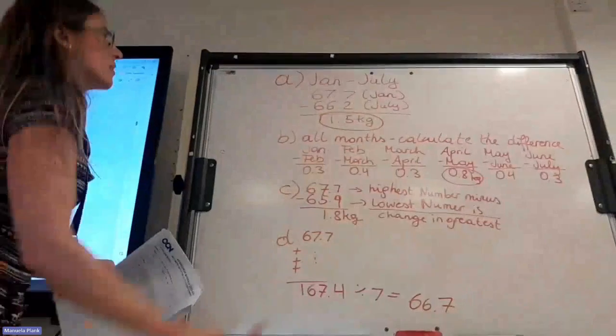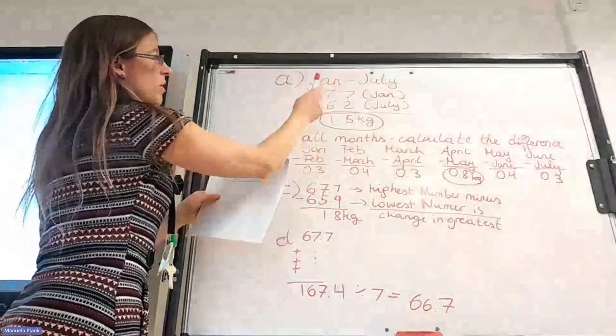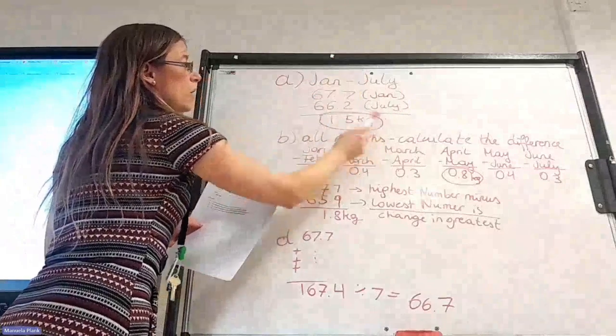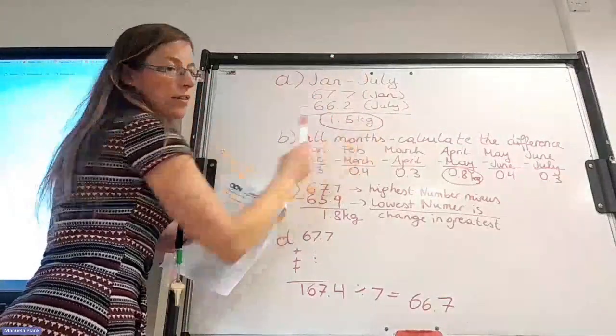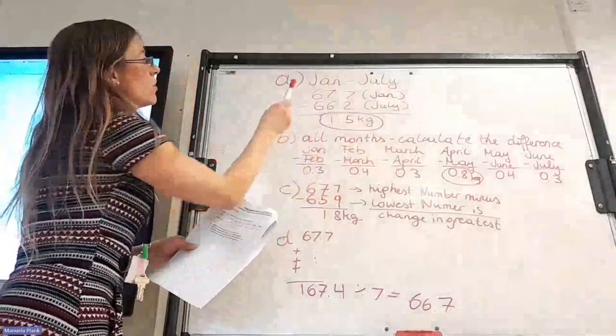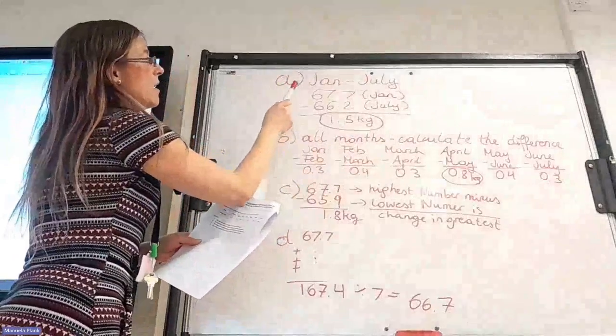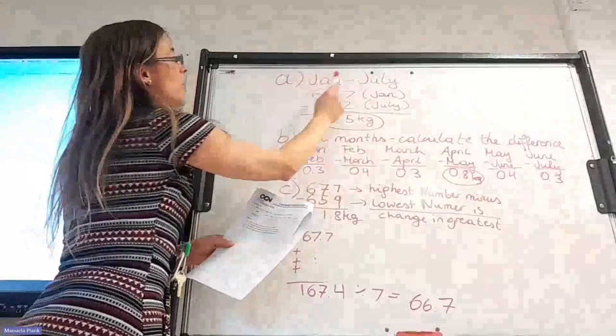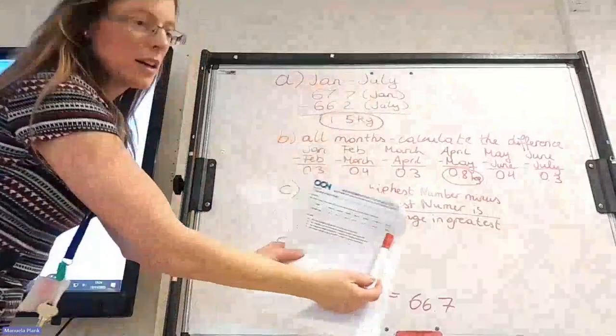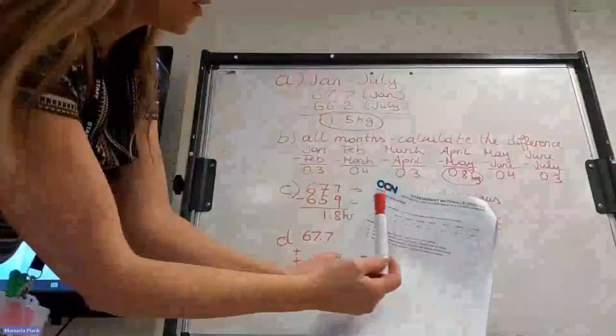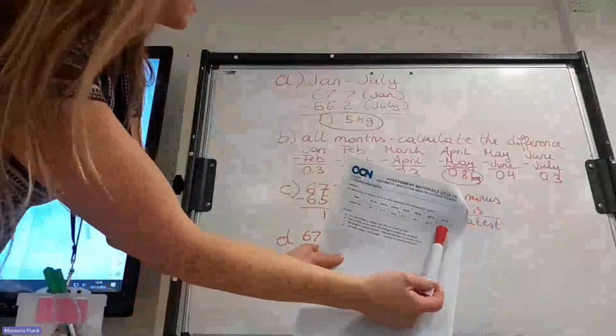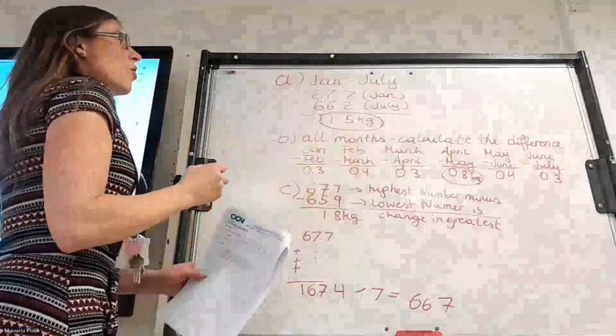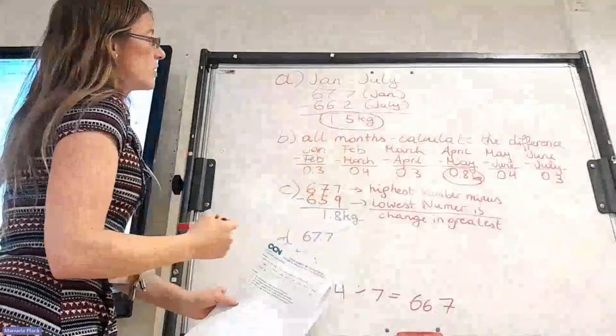So we take January, the first number, minus the last number, which is July, and we get 1.5 kilograms. We always do that for number A. We always take first number, which is in January, minus the last number here. This is in July. So this number minus this number here at the end. And you get the change over the whole period.